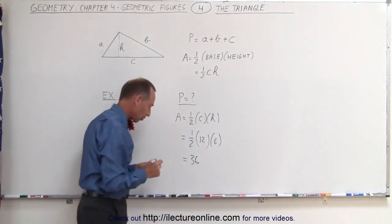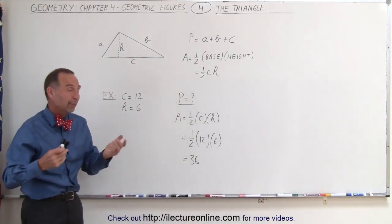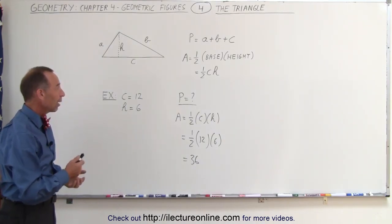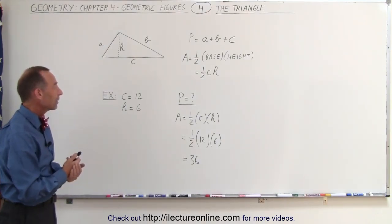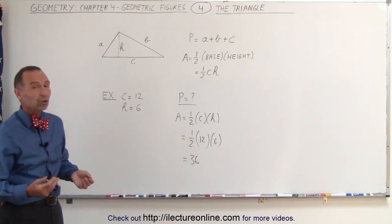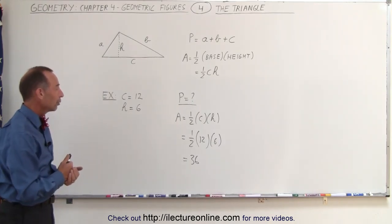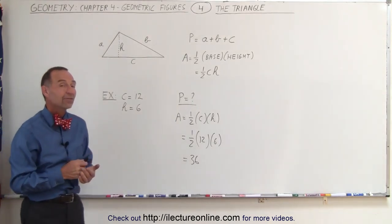So that would be 36 square units. Again, depending upon what the units are. But that's how we find the area of the triangle. And if you want to find the perimeter, you need to be given all three sides in order to do that as well. And that's how it's done.